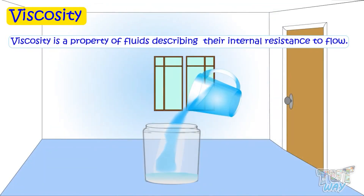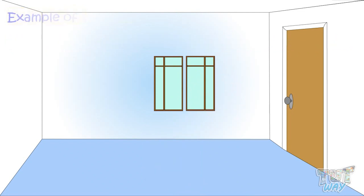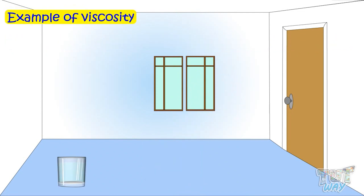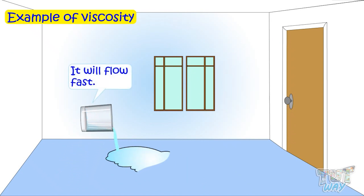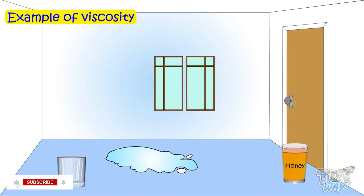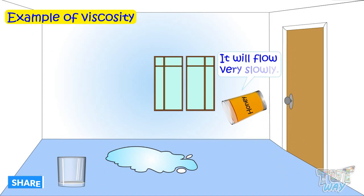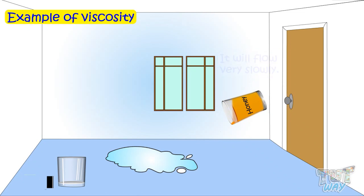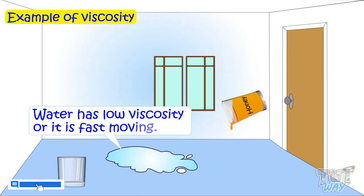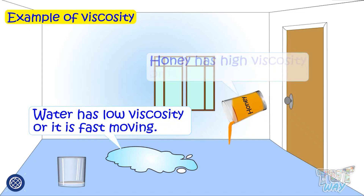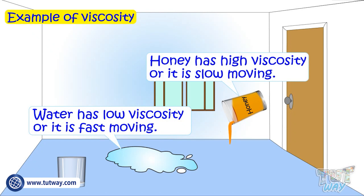Here we have viscosity. Viscosity is a property of fluids describing their internal resistance to flow. For example, take a glass of water and let it flow — it will flow fast. Now take a glass of honey and let it flow — it will flow very slowly compared to water. So water has low viscosity and is fast-moving, whereas honey has high viscosity and is slow-moving.